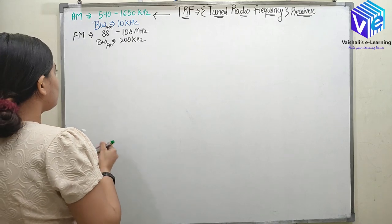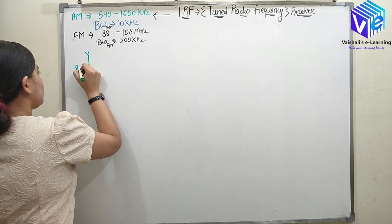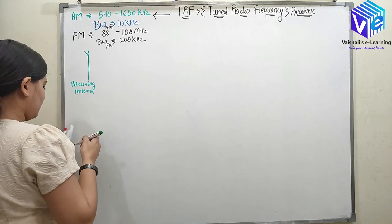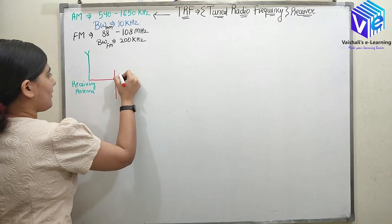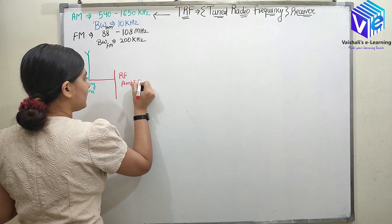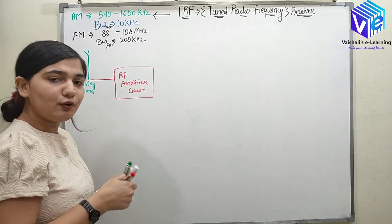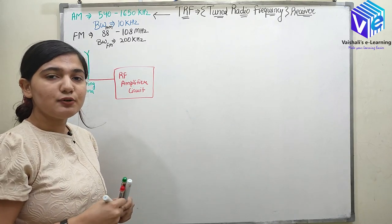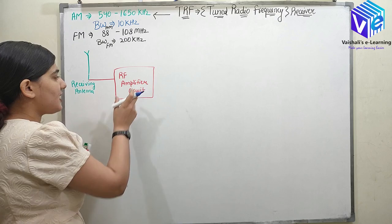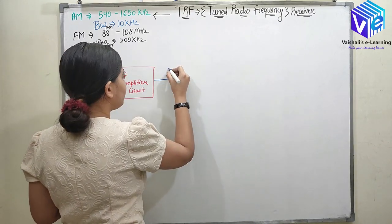Now let me draw the block diagram. Here I have a receiving antenna, which is connected to the radio frequency amplifier circuit. This RF amplifier is also a tuned circuit. I already told you about the tuned circuit in my previous video — the tuned circuit is used for the selectivity of the signal. This RF amplifier circuit helps the receiver to select the desired signal.